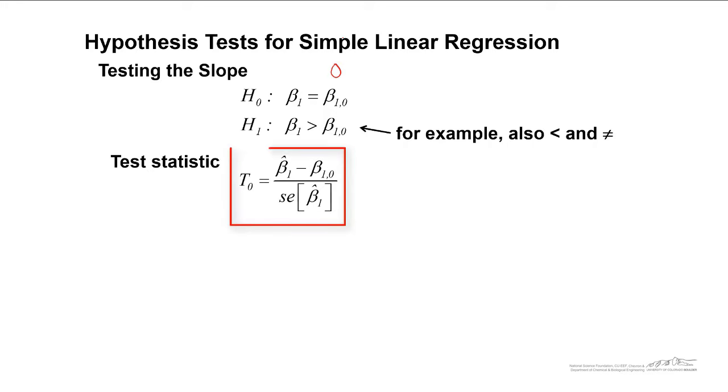The test statistic is shown here. We take our beta_1 estimate. So beta_1 hat is estimated from our sample data and we subtract whatever we are hypothesizing in our null hypothesis. And again many times that's just equal to zero. And we divide by the standard error of our slope.